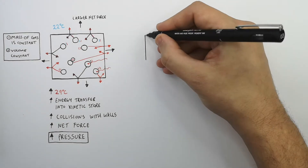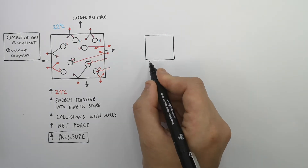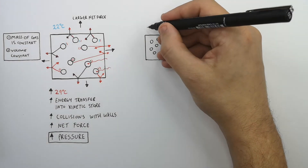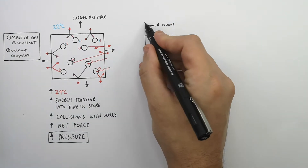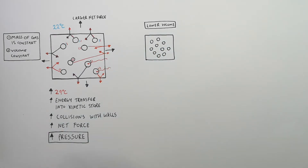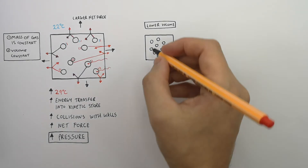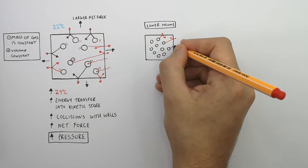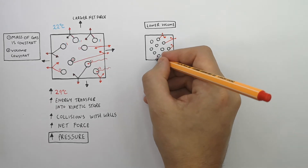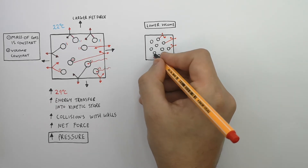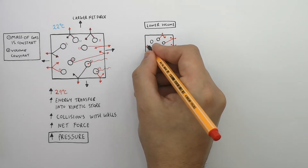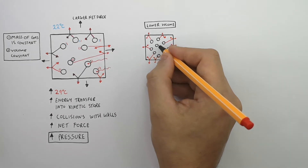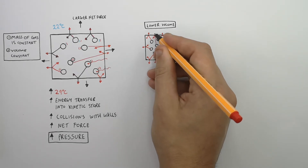We've still got the same eight gas particles, but we've now decreased the volume of the sealed container. This is a sealed container with a lower volume than the previous one. With the same number of particles in a smaller volume, there are going to be more collisions between the particles and the surface. That means there will be an increased net force acting on the surface of the sealed container, which has a smaller volume.